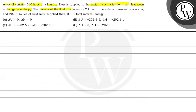The volume of liquid increases by 2 liters. If the external pressure is 1 atm and 202.6 joules of heat were supplied, then U is total internal energy. Options are: ΔU = 0, ΔH = 0; ΔU = +206.6 J and ΔH = +202.6 J; ΔU = -202.6 J and ΔH = -202.6 J; or ΔU = 0 and ΔH = +202.6 J.